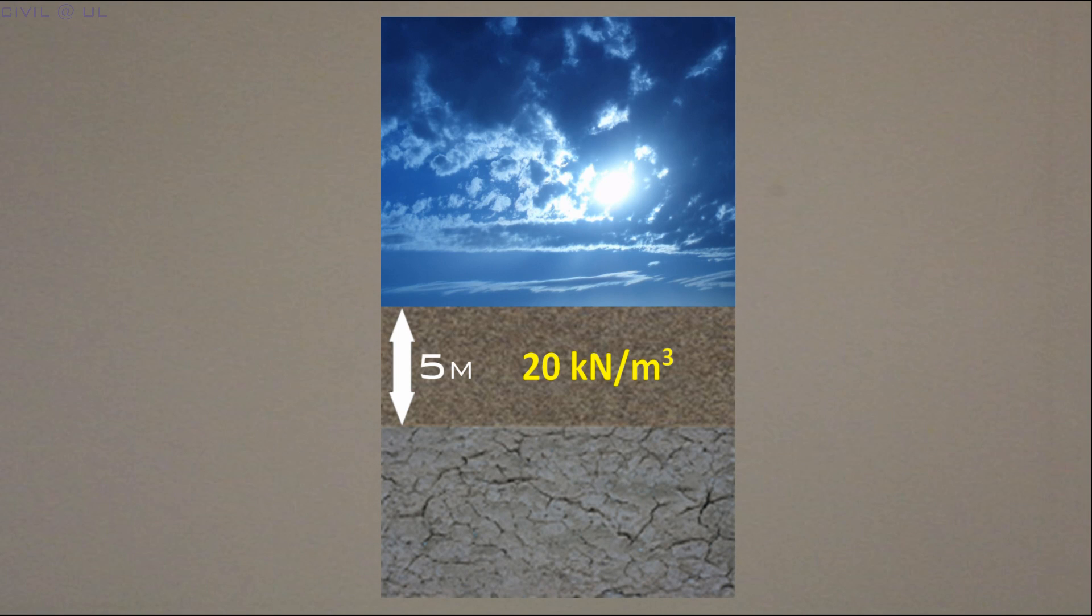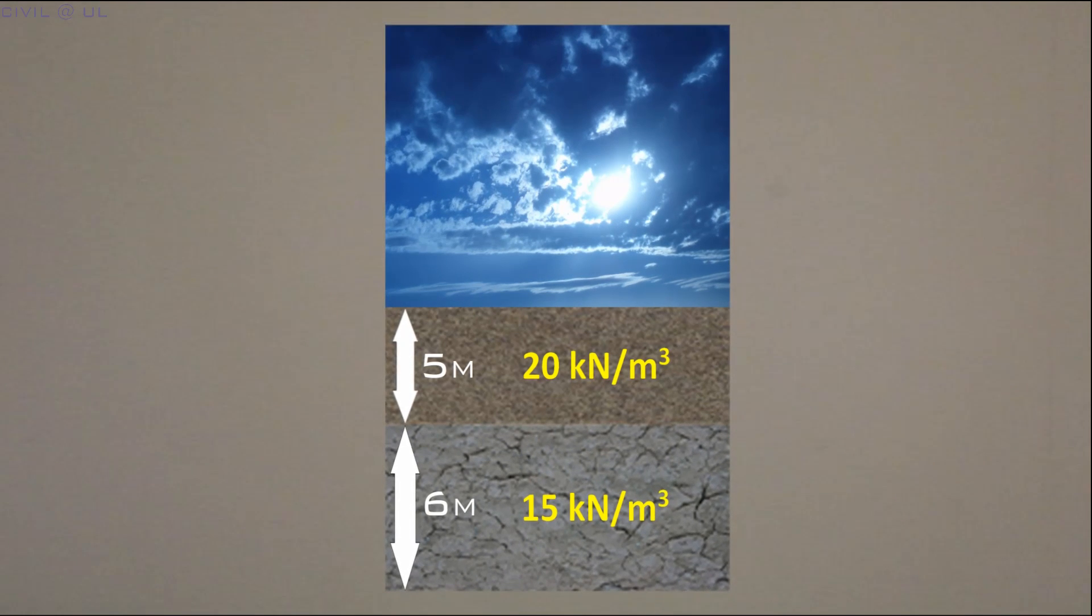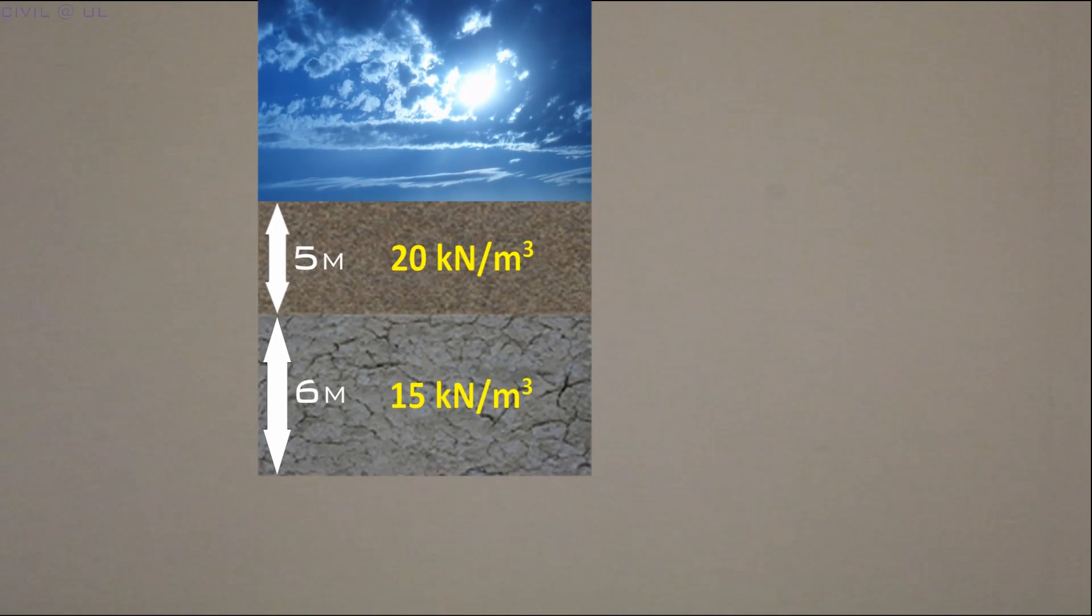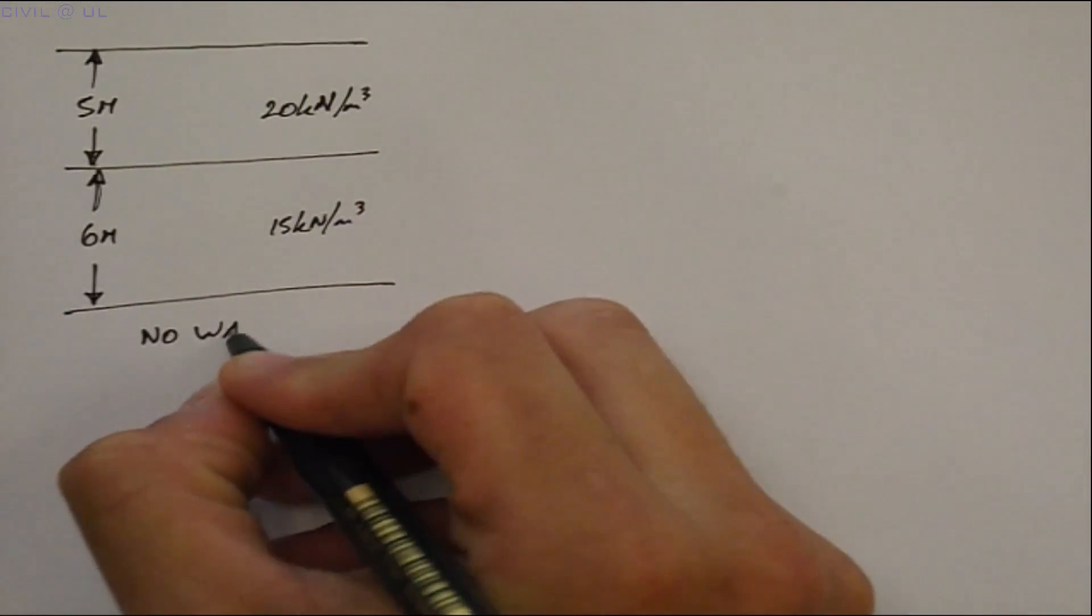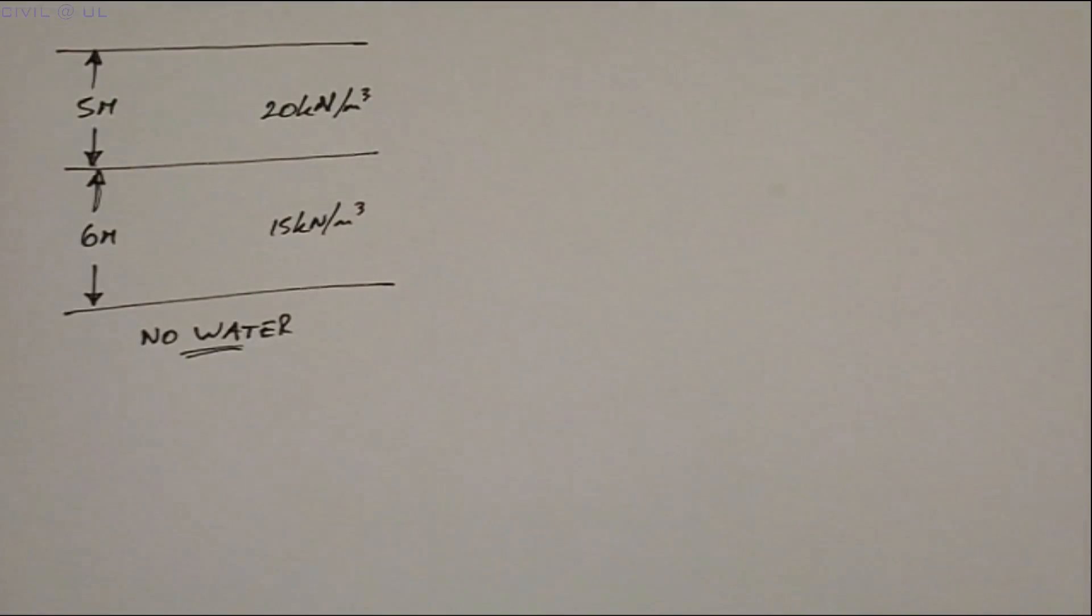This overlies a second strata which is six meters thick and has a unit weight of 15 kilonewtons per meter cubed. And let's say for some reason we're interested in finding the effective stress at the bottom of the second strata.